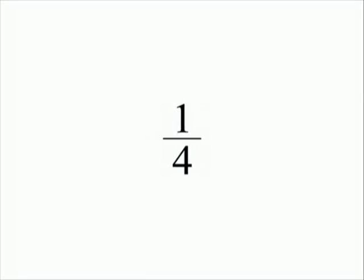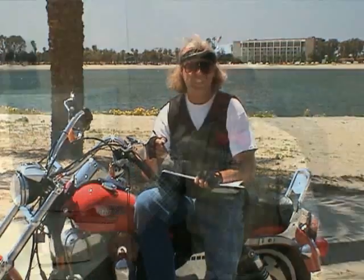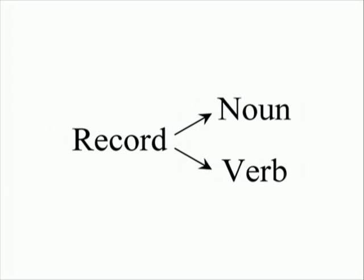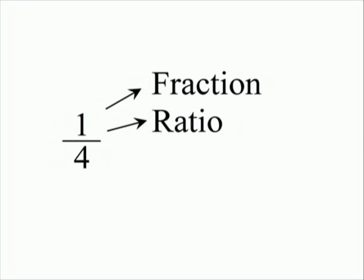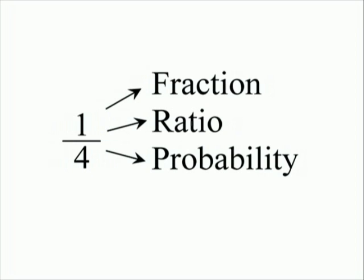Look at this number again and tell me what it is. Well, that's easy — we just said a minute ago it was the fraction one-fourth. But first let me ask you about the word 'record.' It could be the noun 'record' or the verb 'record' — two distinct meanings depending on context. Similarly, this object has at least four different definitions: it could be a fraction one-fourth, a ratio one to four, a probability of one chance out of four, or a division problem one divided by four.